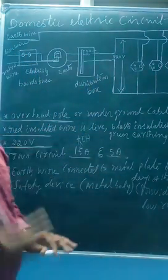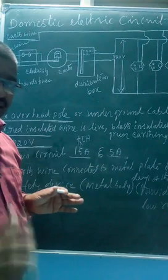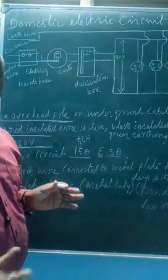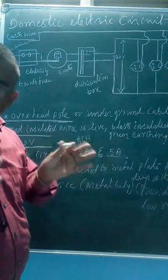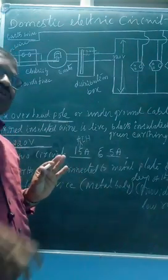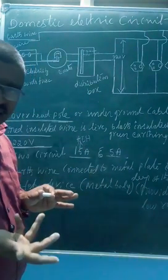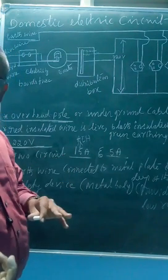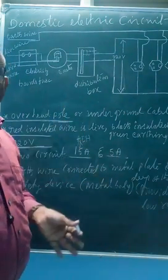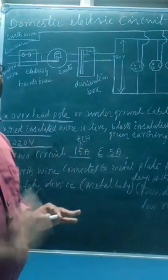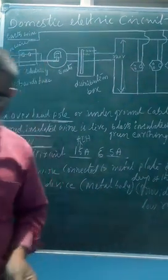So this completes the domestic circuit and the Magnetic Effect of Electric Current chapter. Refer to your textbook — read it two or three times. The first time it may be difficult, but read and listen multiple times and the textbook will become perfect. It covers all questions. Next, the chapter is Sources of Energy, which I will take in the next class. Thank you.